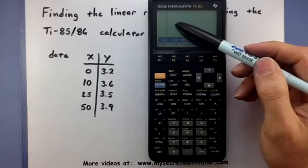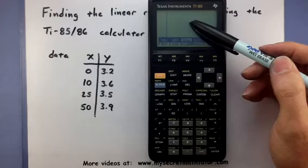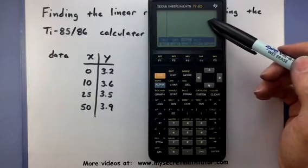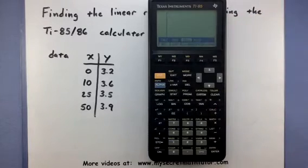Here's my data point at 10, 3.6. There's one at 25, 3.5, and another one for 50, 3.9. And there's actually one right here on the axis at 0, 3.2, but it probably doesn't even show up because it's the same size as the axis.